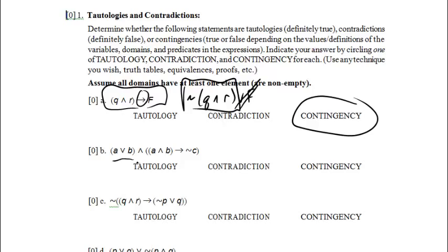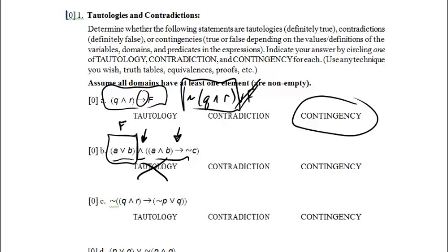On to the next statement. We've got a or b and the rest of this. If a or b is ever false, the whole statement will be false because we're ANDing it with the rest. And a or b can be false — if we make a and b both false, this part will be false, making the whole statement false. So we know the statement can be false, which means it cannot be a tautology. It could still be a contradiction or a contingency.